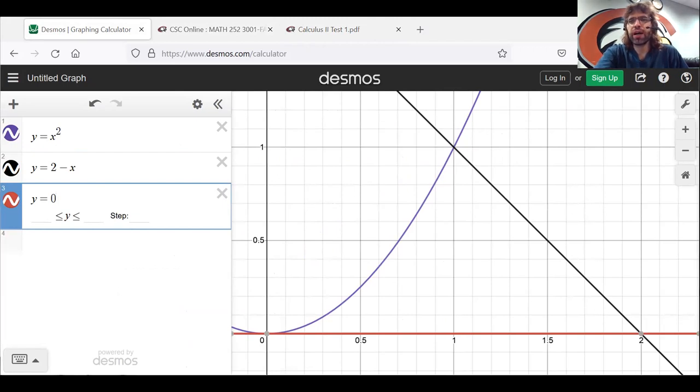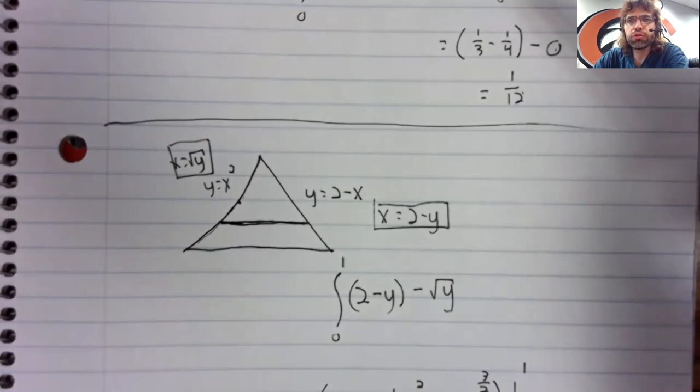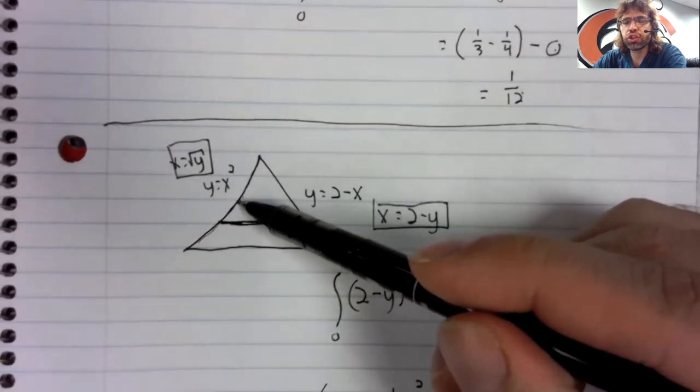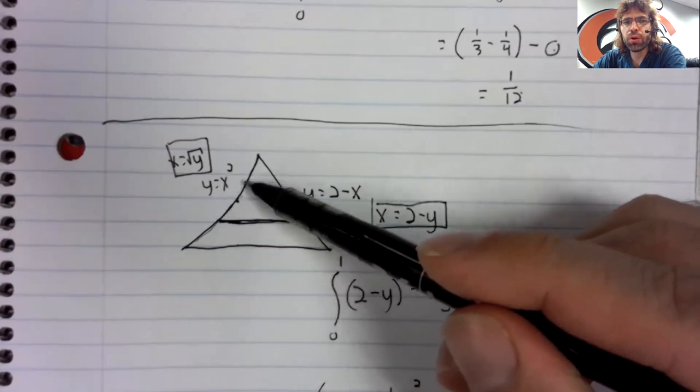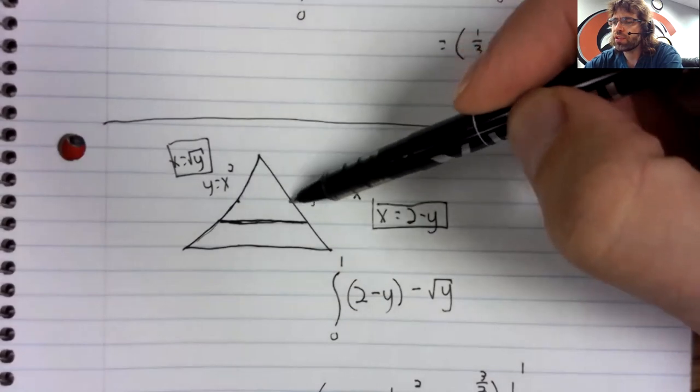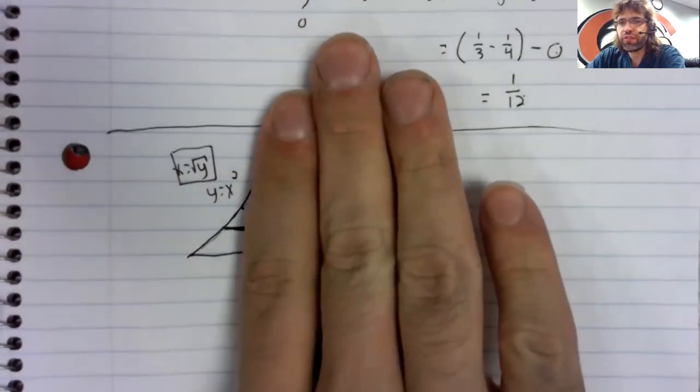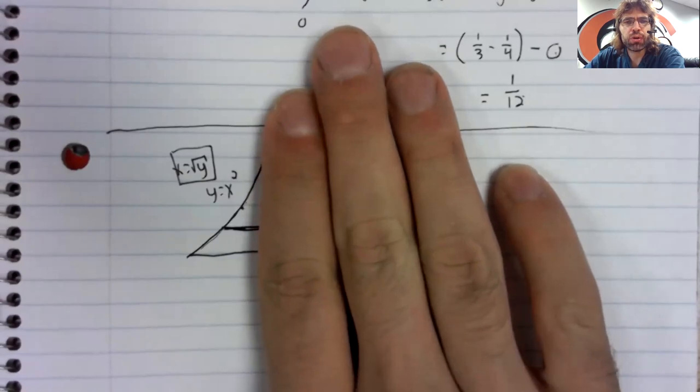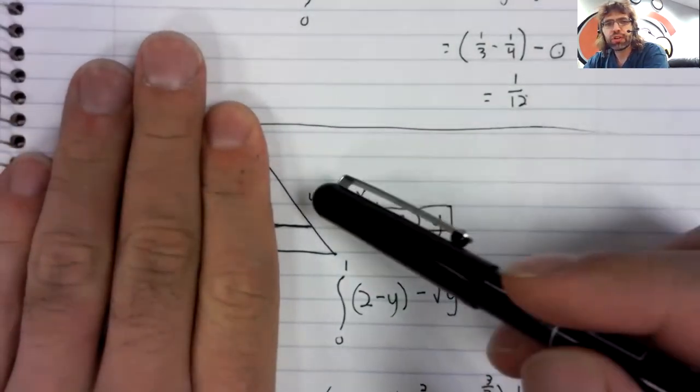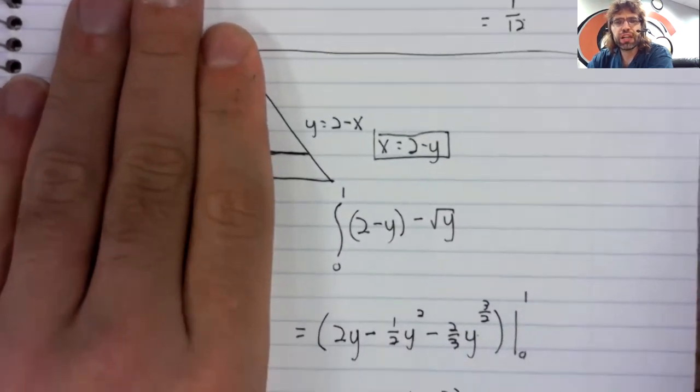If you tried to integrate with respect to x, you would run into trouble. You could do it, but your upper curve would change. Here our upper curve is x squared, here our upper curve is two minus x. So what you'd have to do is find this area where the upper curve is x squared, and then find this area where the upper curve is two minus x, and add those areas together.